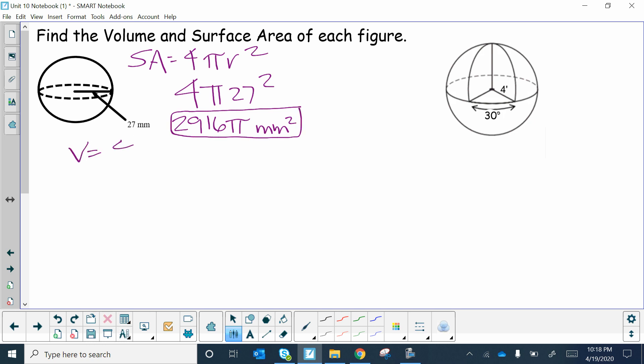So the exact surface area is 2916π mm². Pretty easy. Let's do the volume. Volume is 4/3πr³, so I'm going to put 27 in there. 27³ is a really big number, 19,683. Then times 4/3, which comes out to 26,244π mm³. This is the exact answer, and that's the volume.